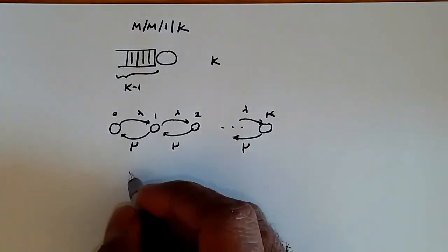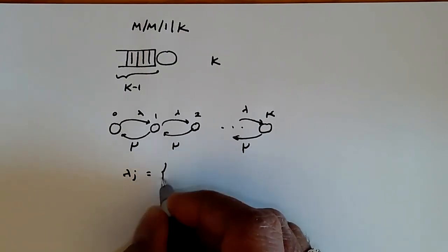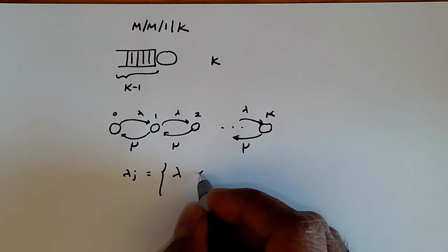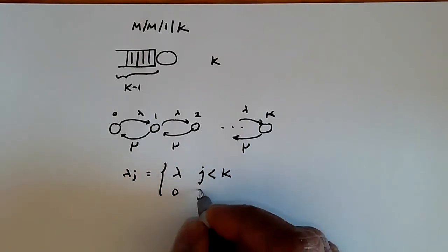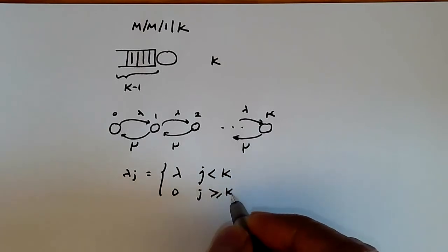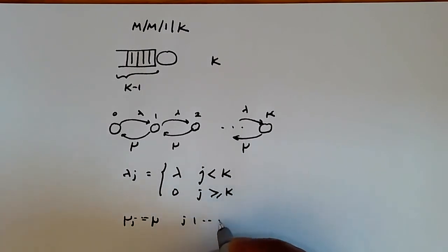So the state transition rates, to be more precise, lambda j is equal to lambda if j is less than k, or 0 for j greater than or equal to k. And mu j equals mu for j is 1 to k.